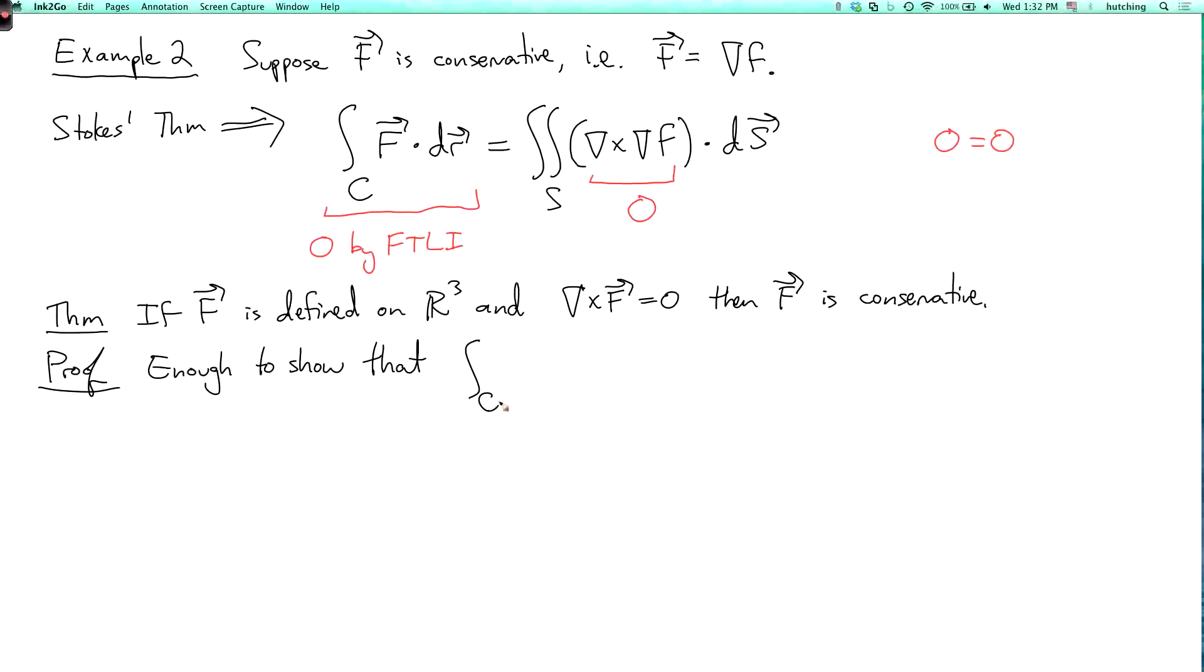that the integral over c of f dot dr equals zero for all closed curves c. In fact, you don't really need all closed curves c. You just need some curves which are made of going in the coordinate directions a few times. And so you can restrict attention to some simpler curves. And in particular, I won't explain all the details of this, but you can restrict attention